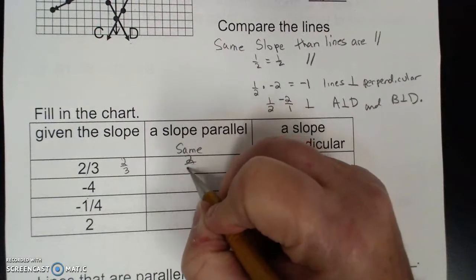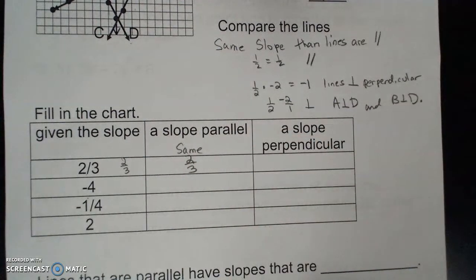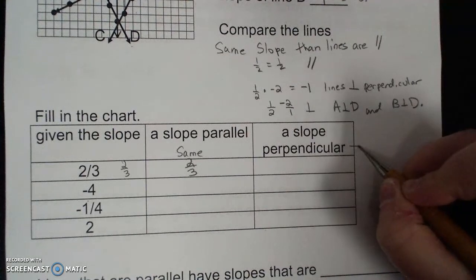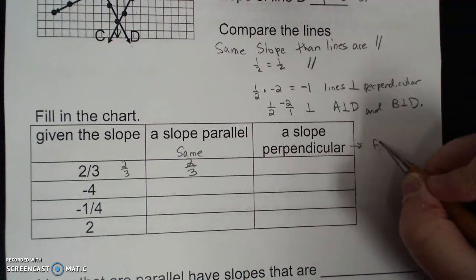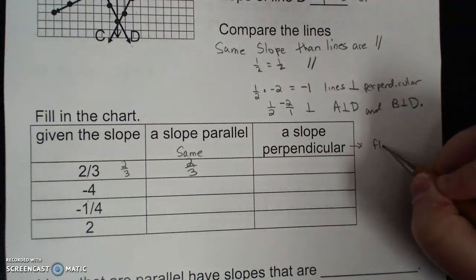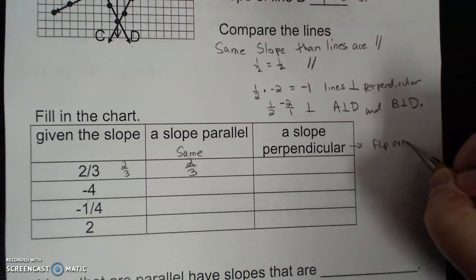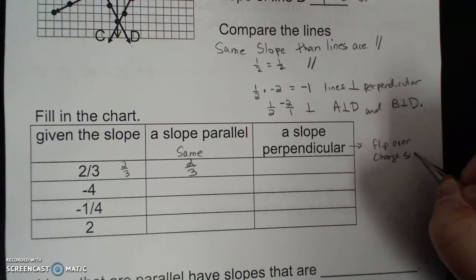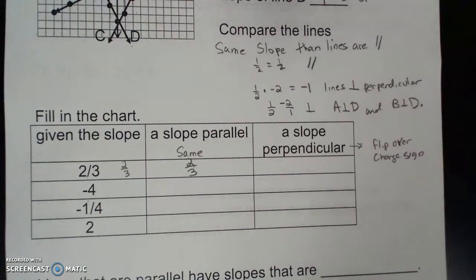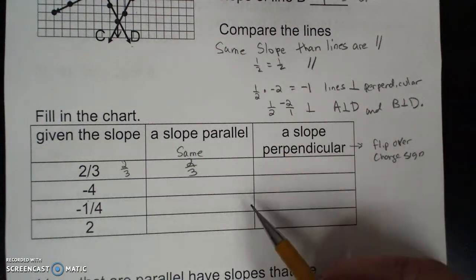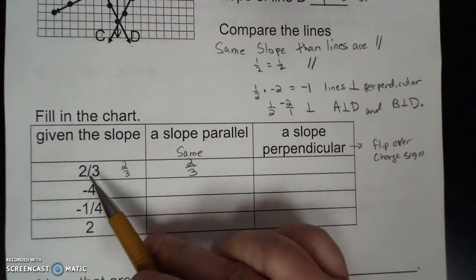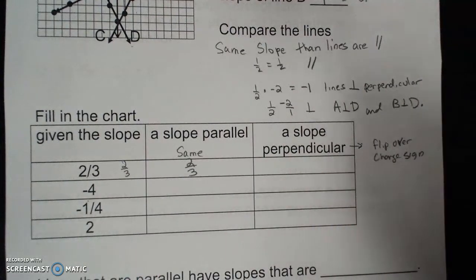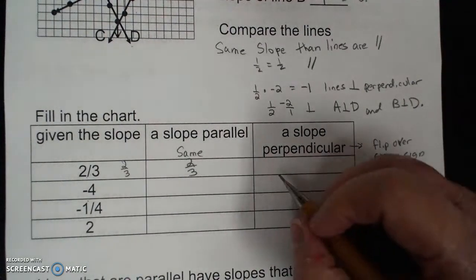For example, if the slope is 2 thirds, the parallel slope is 2 thirds. For the perpendicular slope — it's called the opposite reciprocal — flip it over and change its sign. If I multiply the original slope and the perpendicular slope together, the value is negative 1.